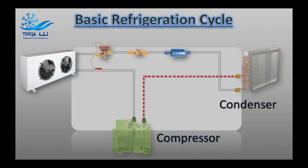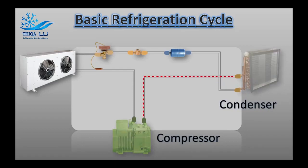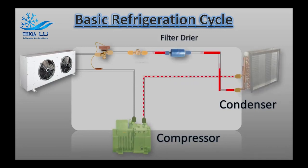Second, the condenser. The condenser, or condenser coil, is one of two types of heat exchangers used in a basic refrigeration loop. This component is supplied with high-temperature, high-pressure vaporized refrigerant coming off the compressor. The condenser removes heat from the hot refrigerant vapor until it condenses into a saturated liquid state, aka condensation.